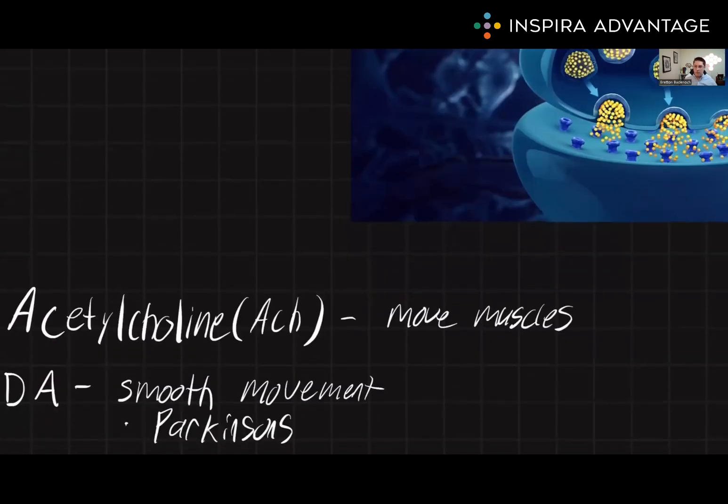Next, we have dopamine. Dopamine maintains smooth muscle movements and steady posture. Oftentimes when we think of dopamine for the MCAT, you want to be thinking Parkinson's. Parkinson's is caused by the loss of dopaminergic cells, or cells that are producing dopamine.